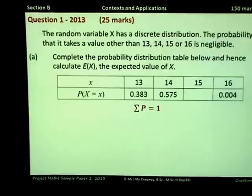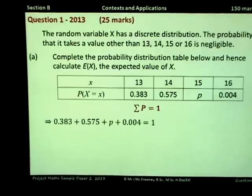We are missing one of these probabilities, so we can just put that in as p. If we add up these four probabilities, they have to add up to 1. If we just solve this simple equation, p works out as 0.038.